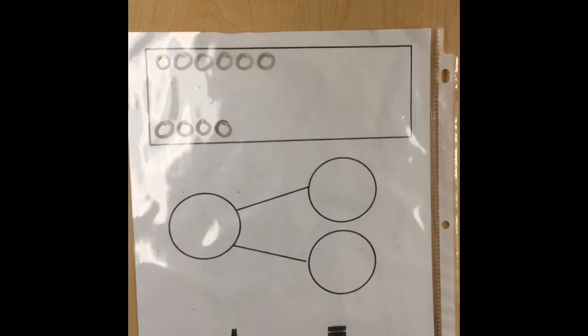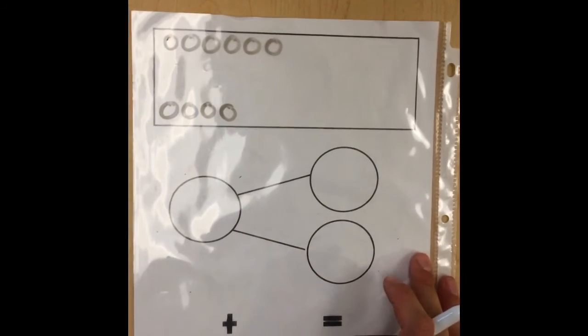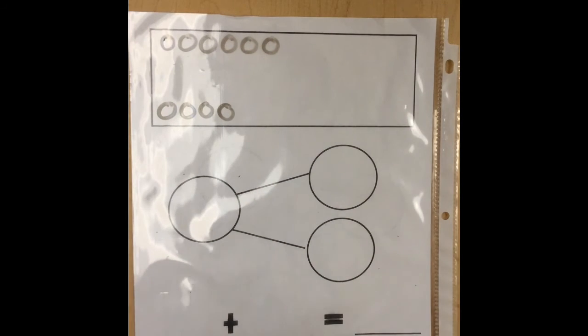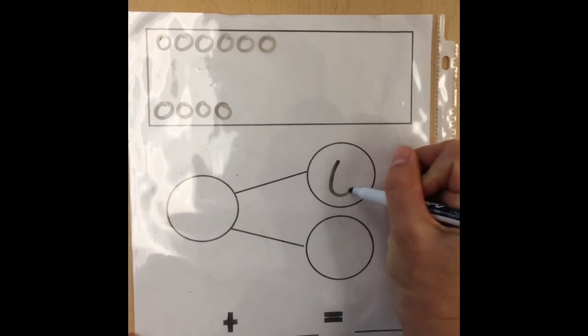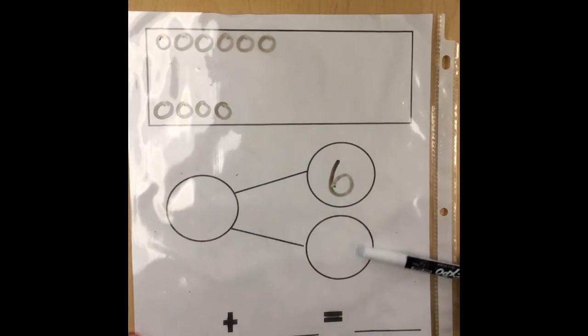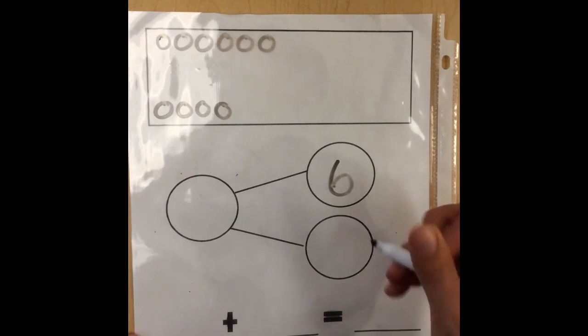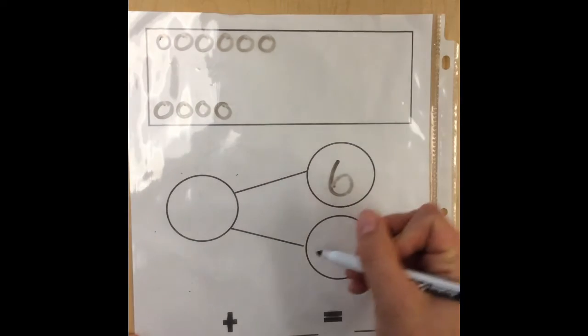Now we have to put our numbers in our number bond. Let's start with our parts. Put your first part in. Our first part would be six seeds. Now let's put our second part in. Our next part would be the four seeds.